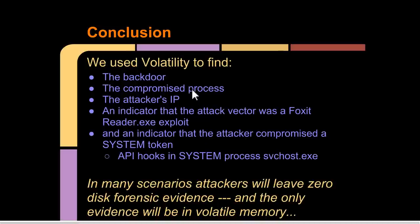Since we're basically out of time, I demonstrated how we use Volatility and IDA to find the backdoor just with malfind. We got a little lucky. I showed you the compromise process. We found the attacker's IP. And we have a strong indicator that the attack vector was a Foxit Reader exploit, and also that the system token was compromised from the API hooks. This was all without using any disk forensic evidence. Someone could realistically have an entire semester-long course on this stuff. Hopefully given all the information on offensive stuff I've presented through the semester, you have an ability to pick this up pretty easily.